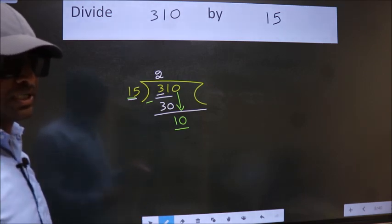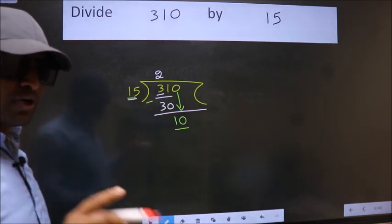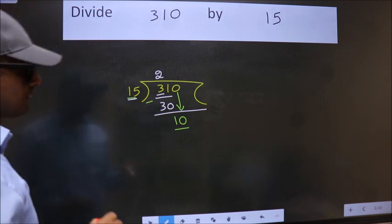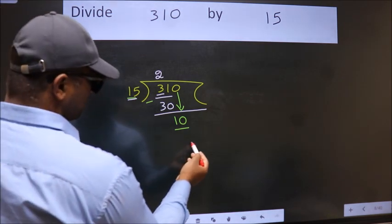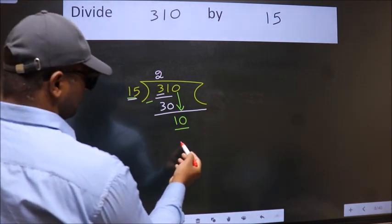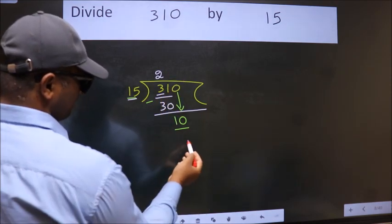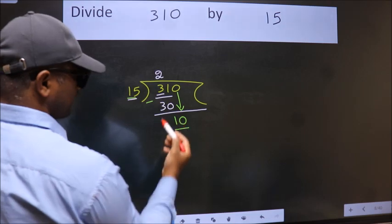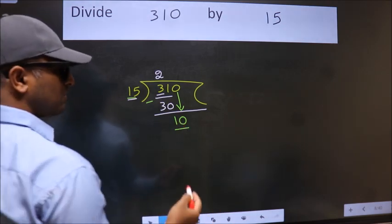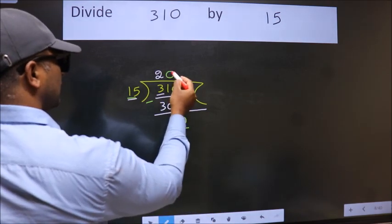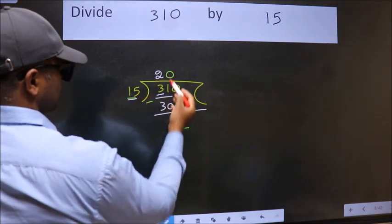Instead of that, what we should think of doing is: Which number should we take here? If I take 1, we get 15. But 15 is larger than 10. So what we do is we take 0 here. So, 15 into 0, 0.